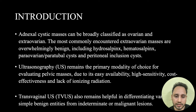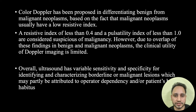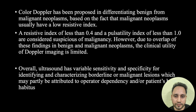Transvaginal ultrasonography also remains helpful in differentiating various simple benign entities from intermediate or malignant lesions. Doppler has been proposed in differentiating benign from malignant neoplasms based on the fact that malignant neoplasms usually have a low resistive index. A resistive index of less than 0.4 and a pulsatility index of less than 1.0 are considered suspicious of malignancy. However, due to overlap of these findings in benign and malignant neoplasms, the clinical utility of Doppler imaging is limited. Overall, ultrasound has variable sensitivity and specificity for identifying and characterizing borderline or malignant lesions, which may partly be attributed to operator dependency and/or patient's body habitus.